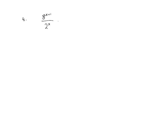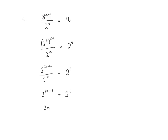For question 4, we have 8 to the power of x plus 1 over 2 to the power of x equals 16. We change all base numbers to powers of 2: 2 cubed to the power of x plus 1 over 2 to the power of x equals 2 to the power of 4. This gives 2 to the power 3x plus 3 over 2 to the power x equals 2 to the power 4. Simplifying: 2 to the power 2x plus 3 equals 2 to the power 4, so 2x plus 3 equals 4, giving x equals a half.